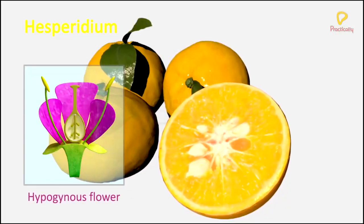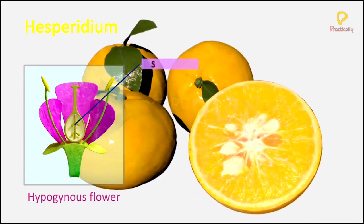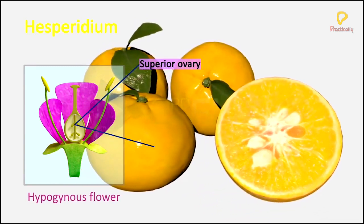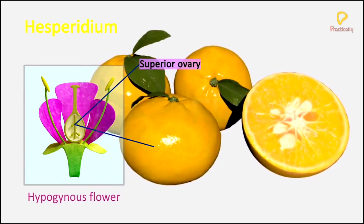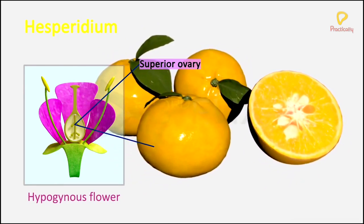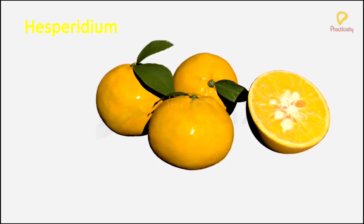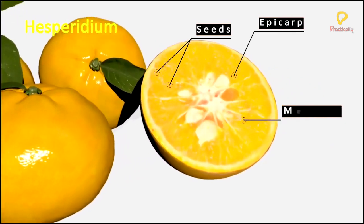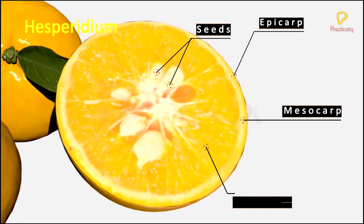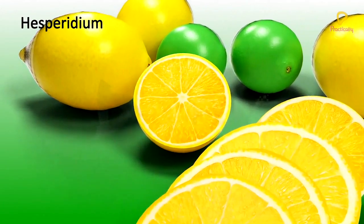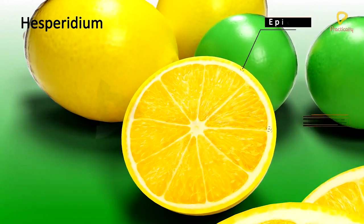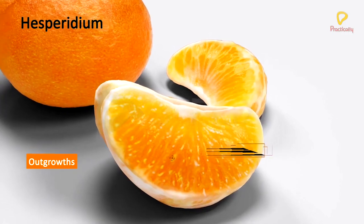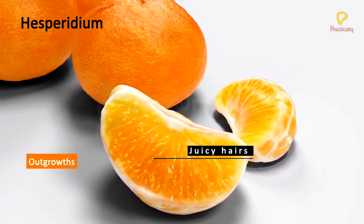Hesperidium. Hesperidium develops from a multicarpellary, syncarpous, multilocular, superior ovary, with seeds on axile placentation. In Hesperidium, the pericarp is differentiated into a thick and leathery epicarp with oil glands; mesocarp is papery; and the endocarp is divided into many chambers. From the inner walls of the endocarp, juicy, succulent hairs are formed as outgrowths, and those hairs form the edible part of the fruit.